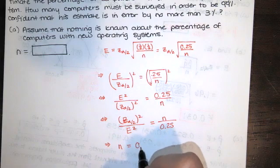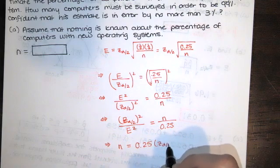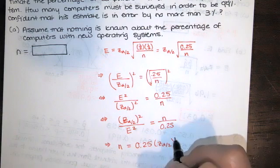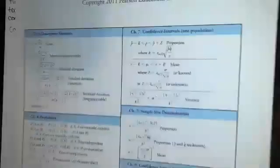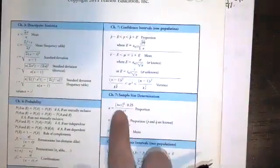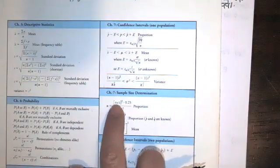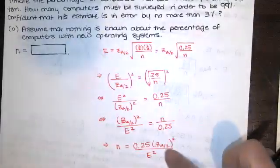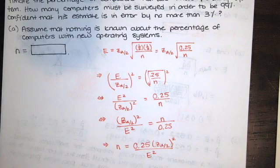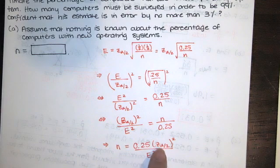You don't have to do this algebra every time. You can just look at your formula. I wanted to show you at least once where it comes from. You've got that z sub alpha over 2 squared, the 0.25, and the error squared. It's just a rearrangement of that error formula. Okay, so we want n. In order to find n, we need z sub alpha over 2 and the error.